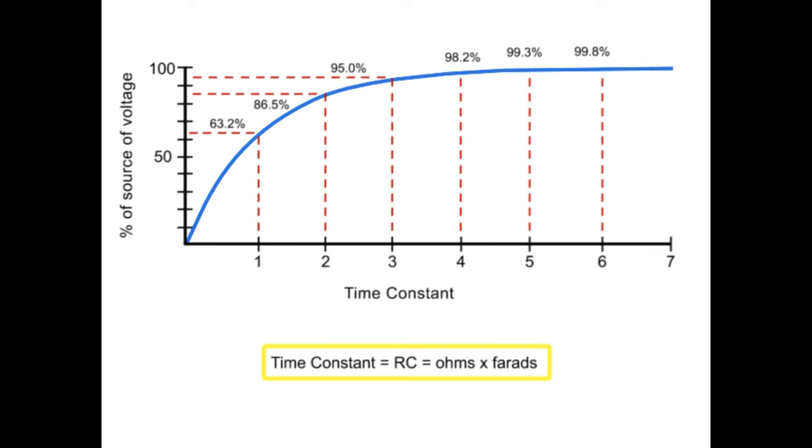A time constant in seconds is equal to the resistance of the circuit in ohms multiplied by the value of the capacitance in farads.